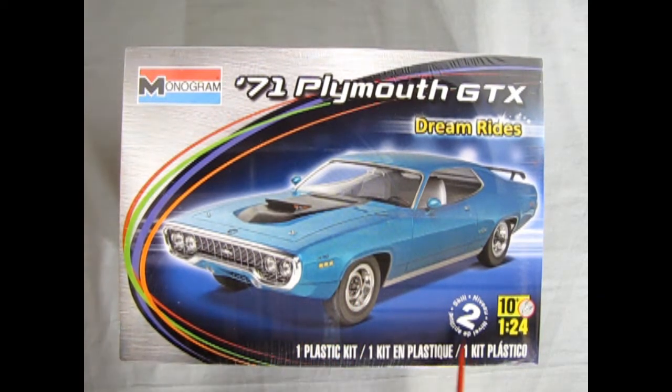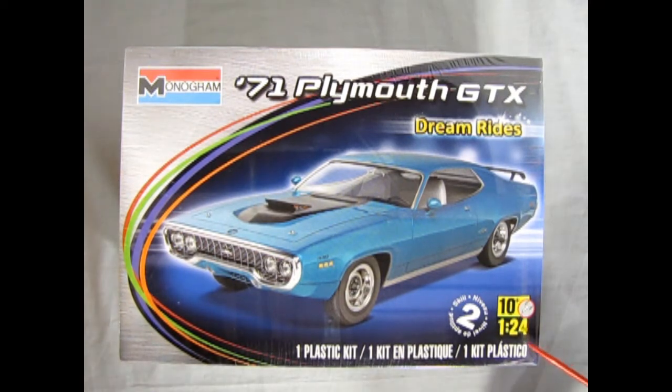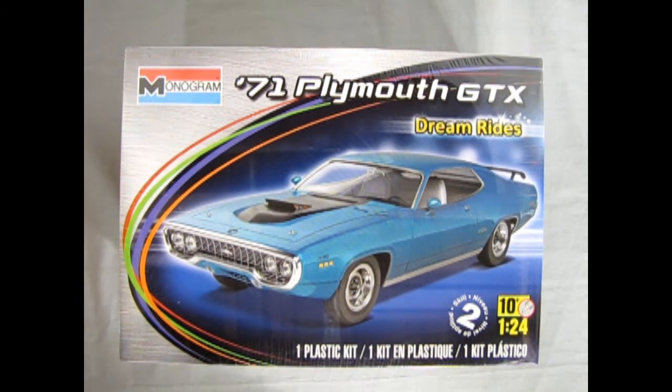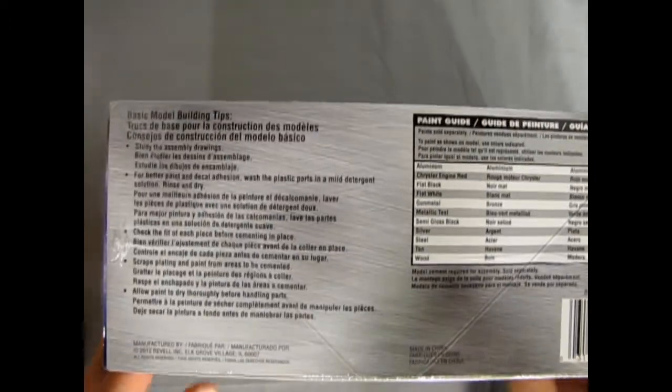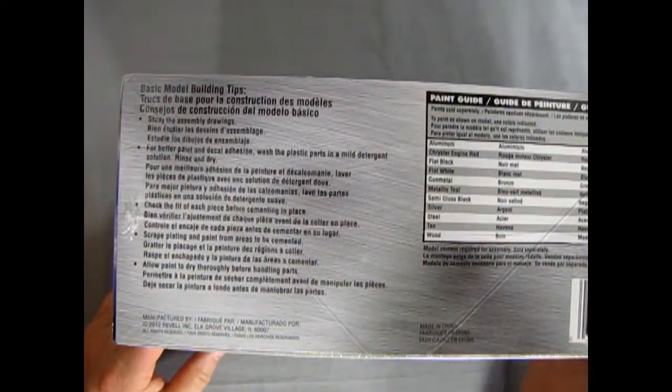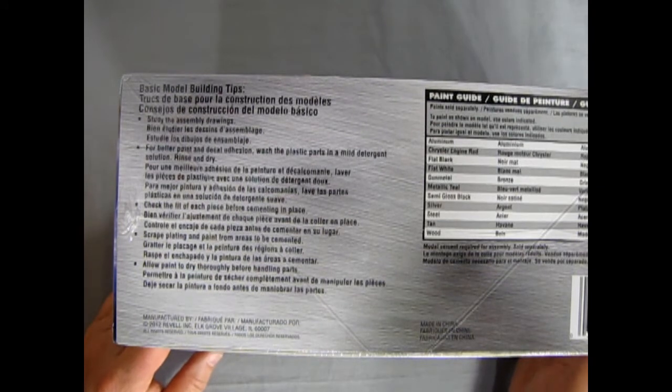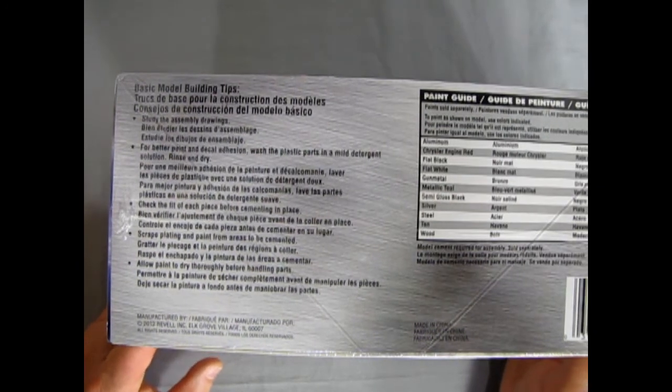This is a scale level 2 kit, 1/24 scale, which is the characteristic Monogram scale. Most Monogram cars came in 24th instead of 25th. Ages 10 and up. We'll take a look at the side of the box here. This one came out in 2012, this version of it, but this is an earlier model going back many years.